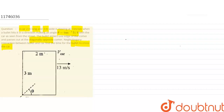This question requires us to analyze the bullet entering the car. The bullet enters here and a theta angle is made. The car has a width, length, and speed.